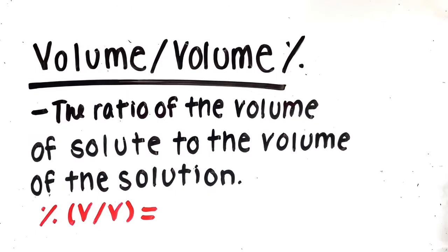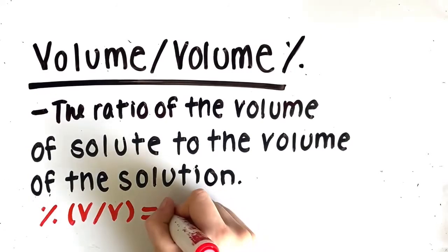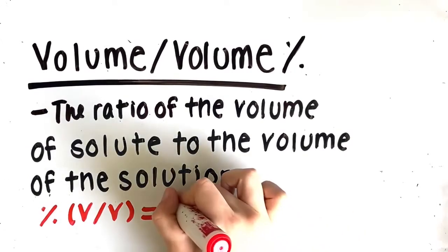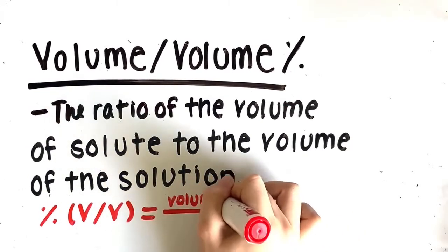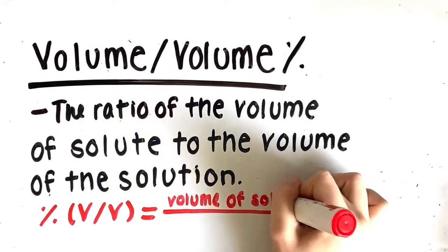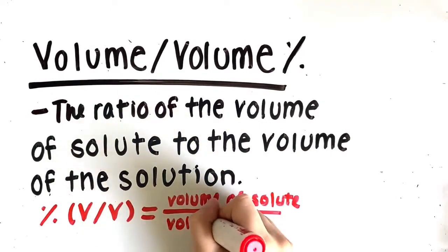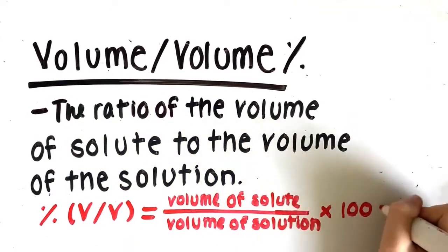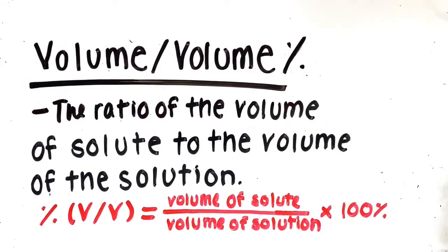Lastly, we have volume over volume percent. This is the ratio of the volume of solute to the volume of the solution, expressed in units of volume over volume percent. The formula is: v/v percent = (volume of solute / volume of solution) × 100%.